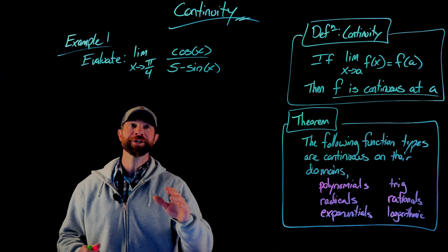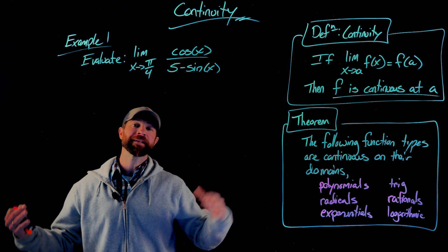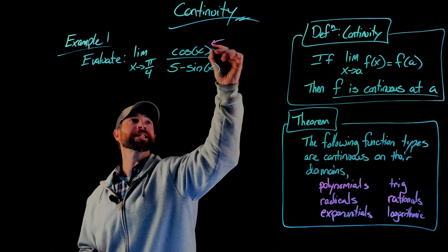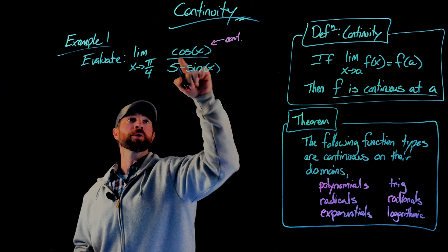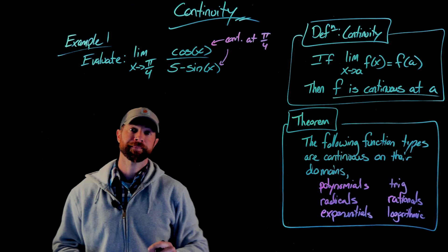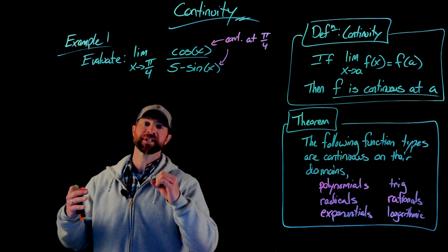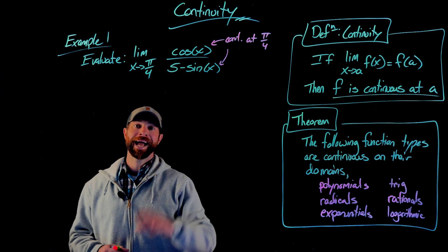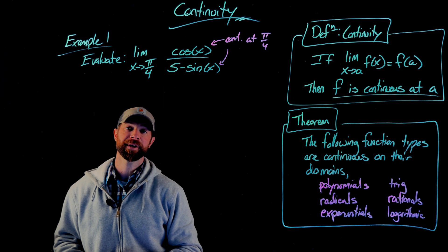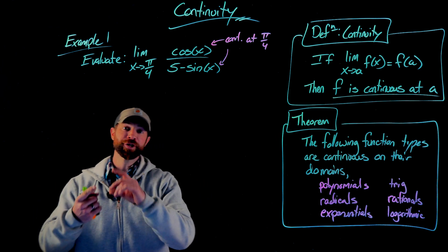First and foremost, we know that cosine and sine have a domain of all real numbers — these are periodic functions that go from negative infinity to positive infinity. They're defined everywhere on their domain, therefore they're continuous everywhere, and specifically, cosine and sine are both continuous at pi over 4. We can think of the number 5 as a constant polynomial of degree zero, and polynomials have a domain of all real numbers, so 5 is also continuous at pi over 4. Then using the theorem about combinations of continuous functions — adding, subtracting, multiplying, and dividing them results in another continuous function.